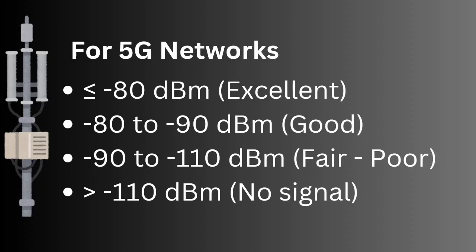Finally, on a 5G network: around minus 80 dBm is excellent — you're very close to the cell tower. Minus 80 to minus 90 is good network. Minus 90 to minus 110 is fair to poor, depending on the network modem your smartphone has and how it can take advantage of the signal. Anything over minus 110 on a 5G network is basically dead — you can't use it.